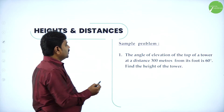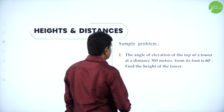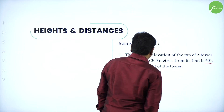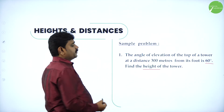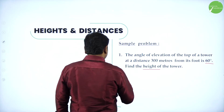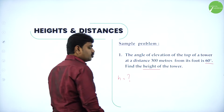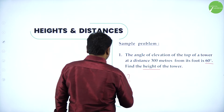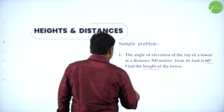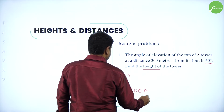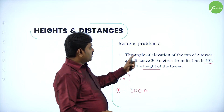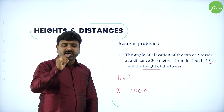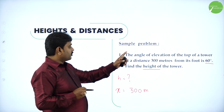Now let us take a sample problem. The angle of elevation of the top of a tower at a distance of 300 meters from its foot is 60 degrees. Find the height of the tower. They want you to find the height of the tower — let H be the height. The distance is given as X, which is 300 meters. They are asking about the angle of elevation of the top of the tower, so first we should draw a diagram. Once you can draw a diagram, then it is easy.